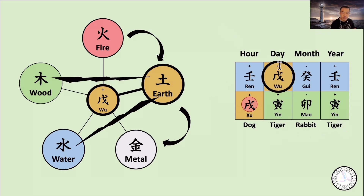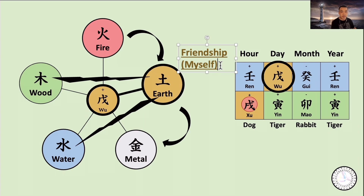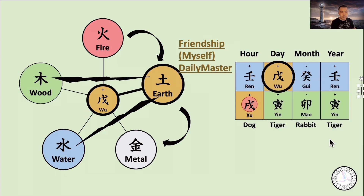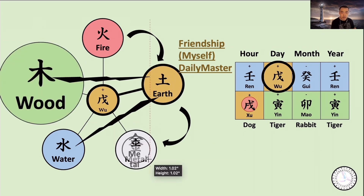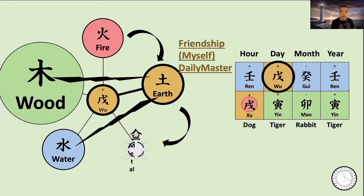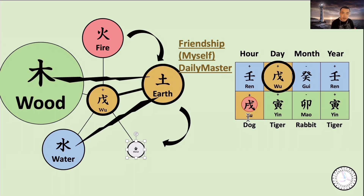The Daily Master is Woo Earth, so I put Woo Earth in the middle with a slightly thicker circle because it's the Daily Master. The Daily Master is the same as Friendship Spirit. There are three wood, noticeably located on the Yearly Branch, Monthly Branch, and Daily Branch — it could be really big, absolutely big. There is no metal, so I'll draw that very small. There is no fire, but there is a little fire in the Dog, so I'll draw it small but larger than metal.